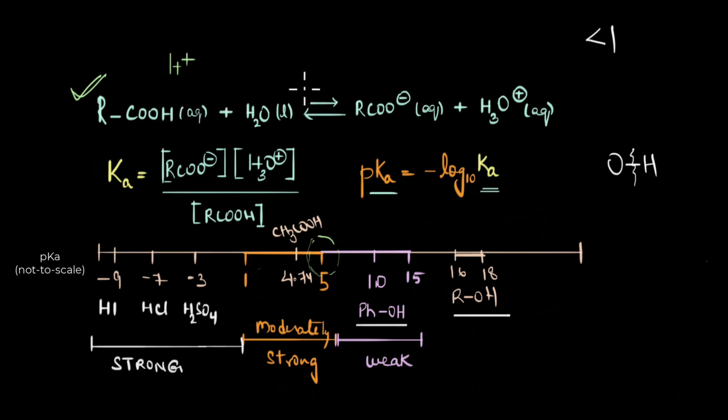So in the next video, let's look at the conjugate bases of alcohols, phenols and compare it with the conjugate base of carboxylic acid, and see why carboxylic acid is actually more acidic than these two and what factors contribute to the stability of the conjugate base here.